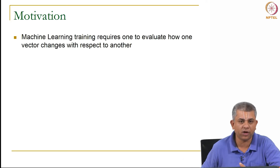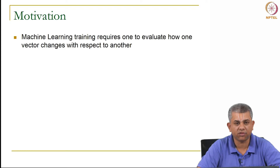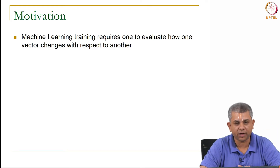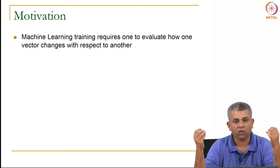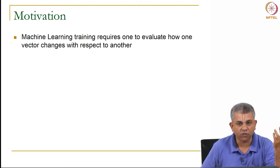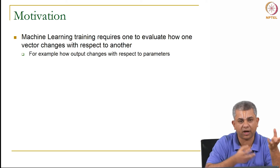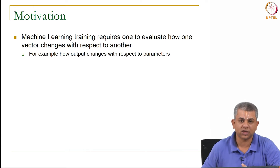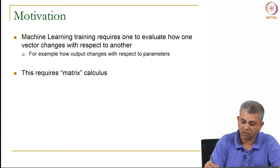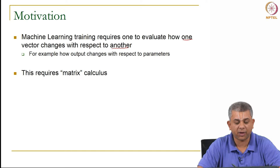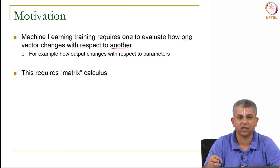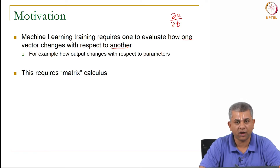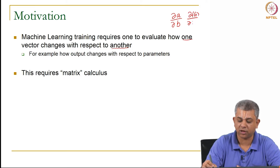The motivation for looking at this is that machine learning basically requires you to take some input vector and change it into some output vector. During training, the input vector you have given does not quite produce the required output vector. If your output changes with respect to some set of parameters, you would like to know how much the output will change when you turn a few knobs or change a few parameters. In such cases, you need to know how one vector changes with respect to another vector or parameter. A standard way to measure how one quantity changes with respect to another is of course the partial derivative. If you have two scalars, you know well how to find how one function changes with respect to a parameter x.